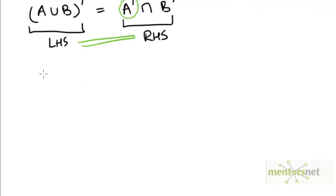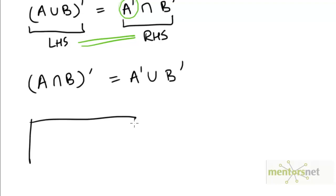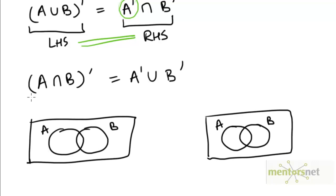Let's try to prove the other law: A intersection B complement is A complement union B complement. We'll draw two Venn diagrams and shade the regions corresponding to both sets. Looking at the left hand side, A intersection B is this tiny region. A intersection B complement is everything outside of this black area.